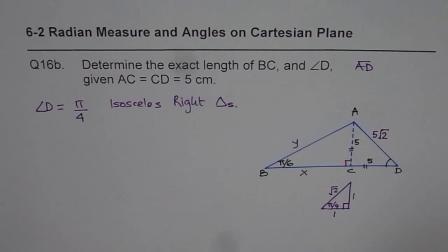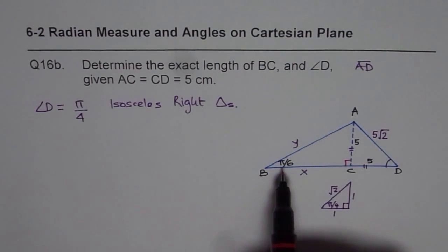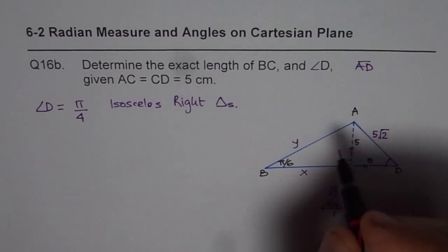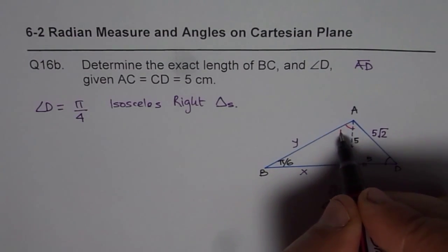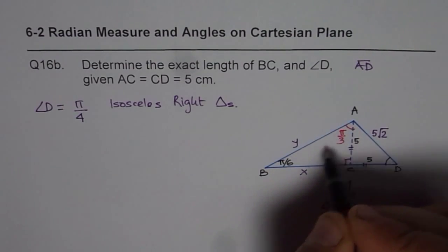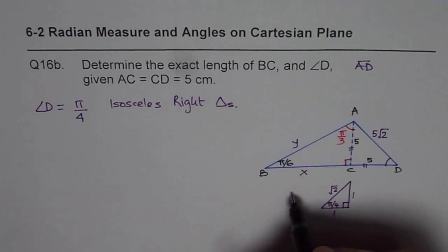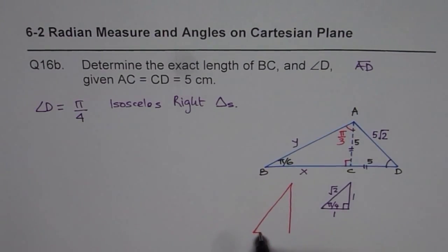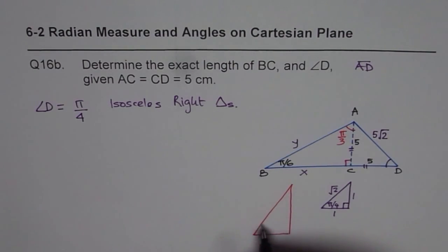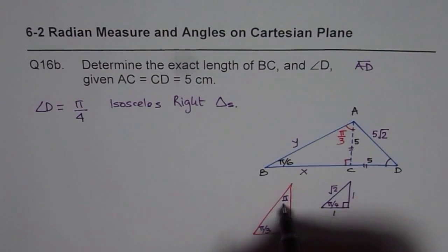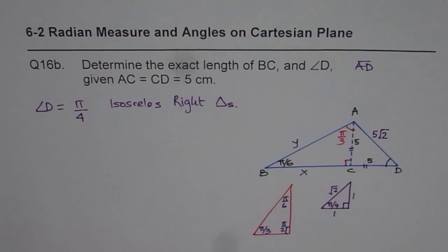Now, the other triangle given to us is basically, this is pi by 6, this is 90, so the other has to be pi by 3, right? Sum of these two should be pi by 2. So what we can do is, we can sketch the other special triangle, which is 30, 60, 90, or in radians, we will write this as pi by 3, pi by 6, and pi by 2, correct? So that is your special triangle,